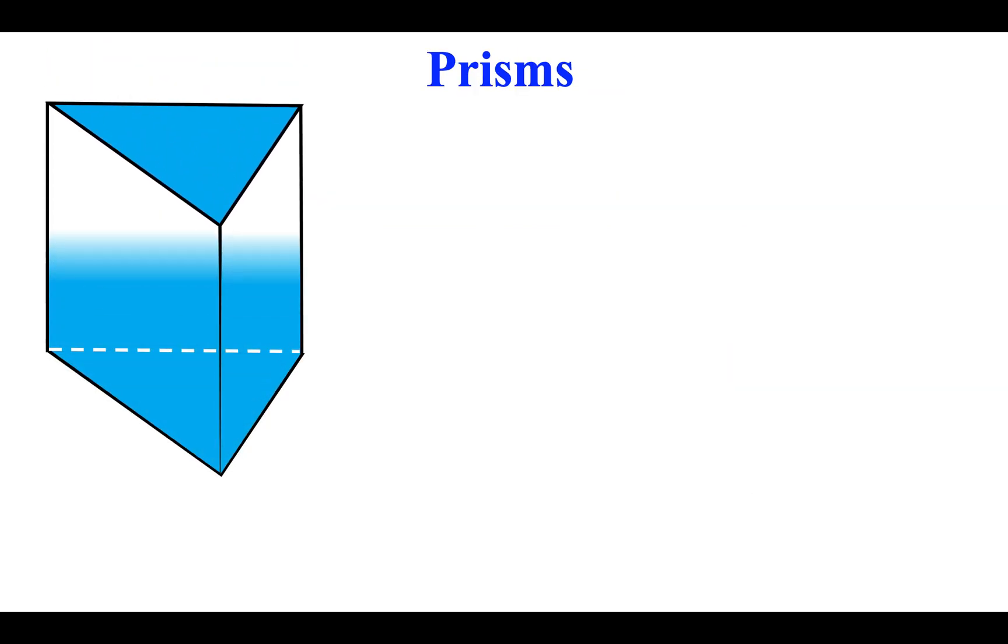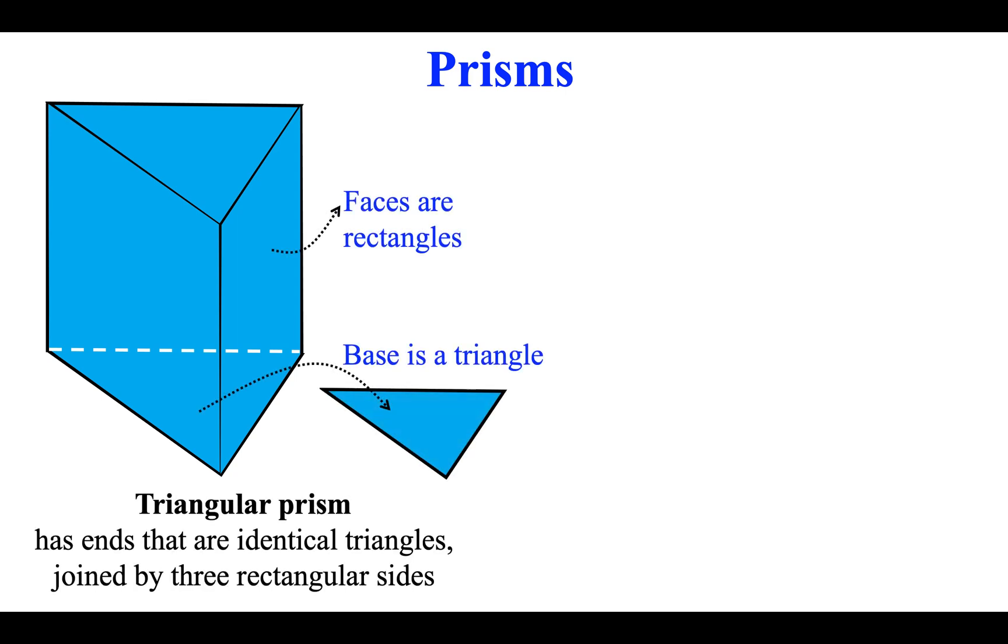Prisms. Triangular prism has ends that are identical triangles, joined by three rectangular sides.